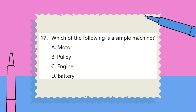Question 17. Which of the following is a simple machine? A. Motor. B. Pulley. C. Engine. D. Battery.